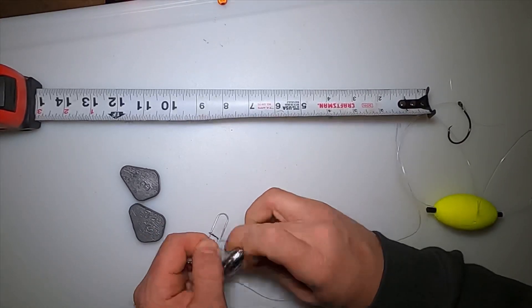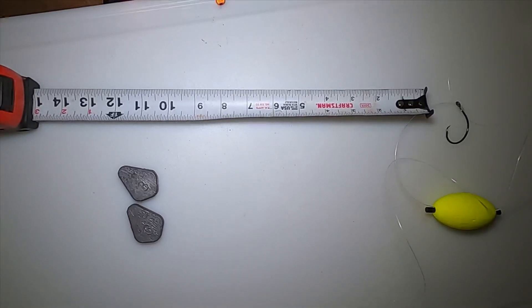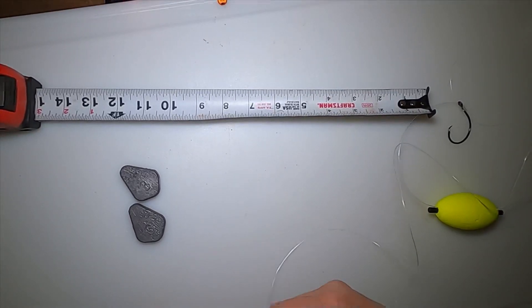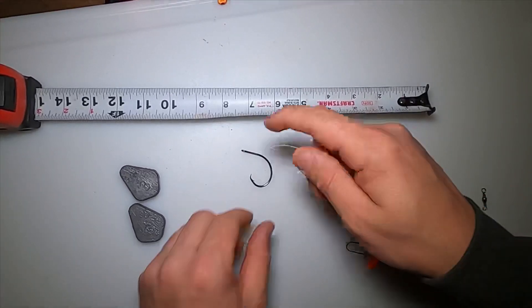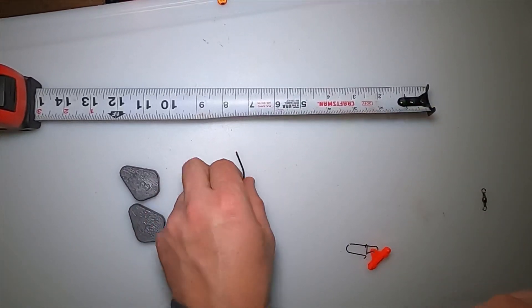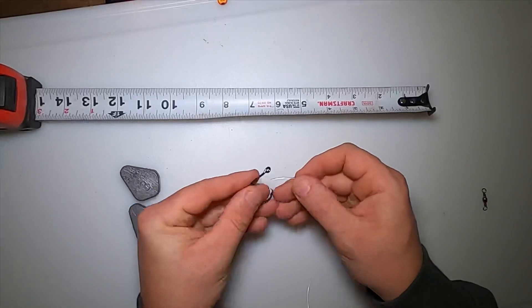But if you don't want to use that method, I'll show you another one. So I got about three and a half feet of leader line, four feet. I'll show you again on this one.